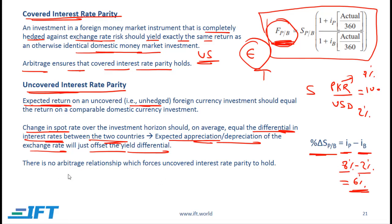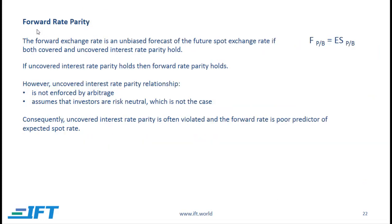There is no arbitrage relationship that forces uncovered interest rate parity to hold. So this prediction that the exchange rate will change by 6% is only a prediction — it is what we expect to happen over a one-year period. There is no guarantee that the spot rate will indeed change by 6%.